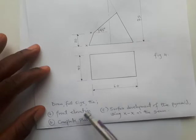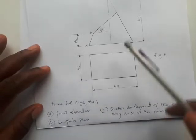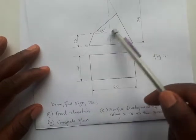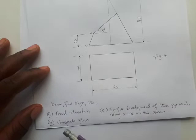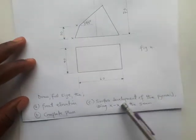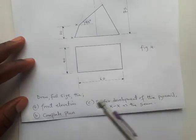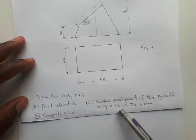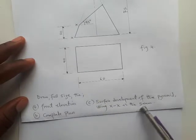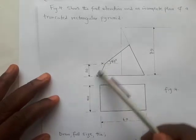The question asks us to draw full size: number one, the front elevation; number two, we're going to be completing this plan; and number three, the surface development of the pyramid using XX as the seam.